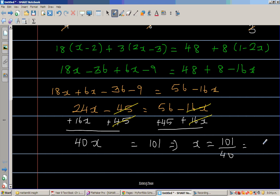So writing this as a mixed number, 40 goes in 101 two times and then you've got 21 remaining. So this is the final answer, 2 and 21 over 40.